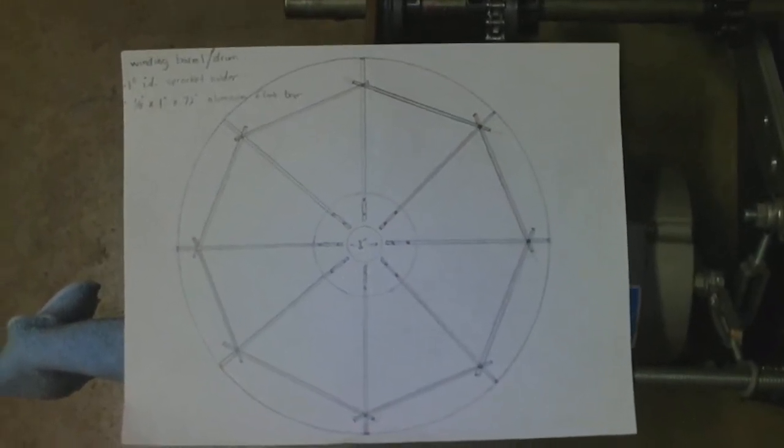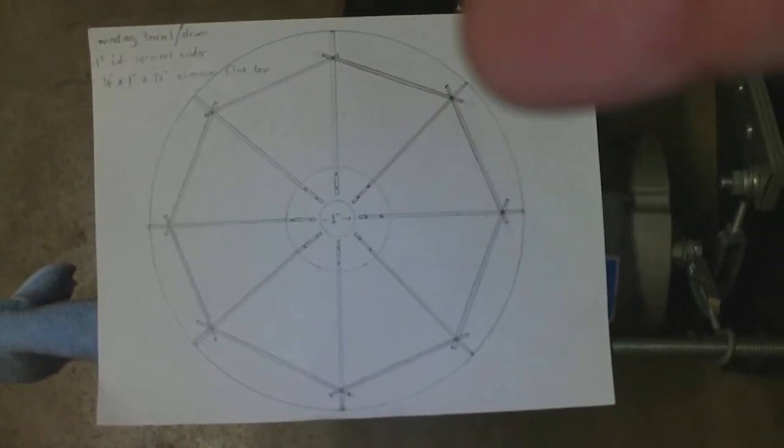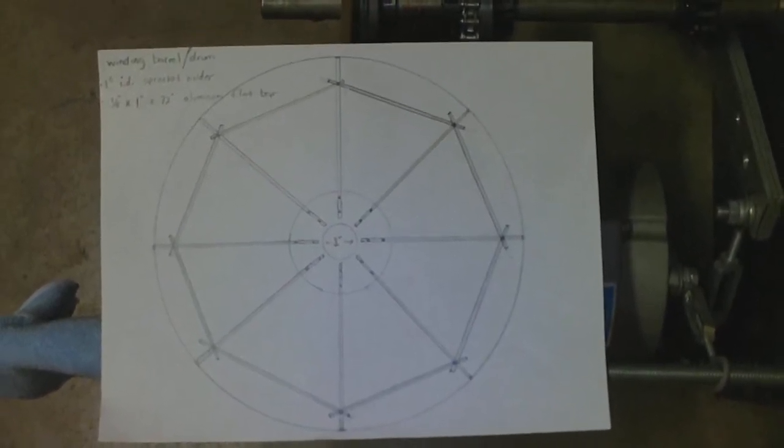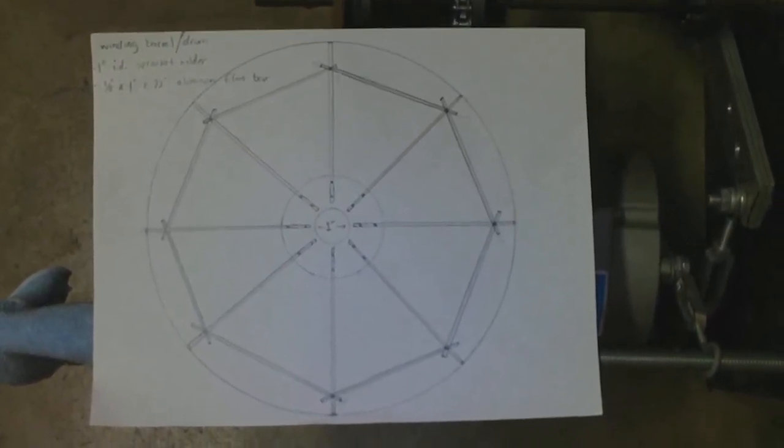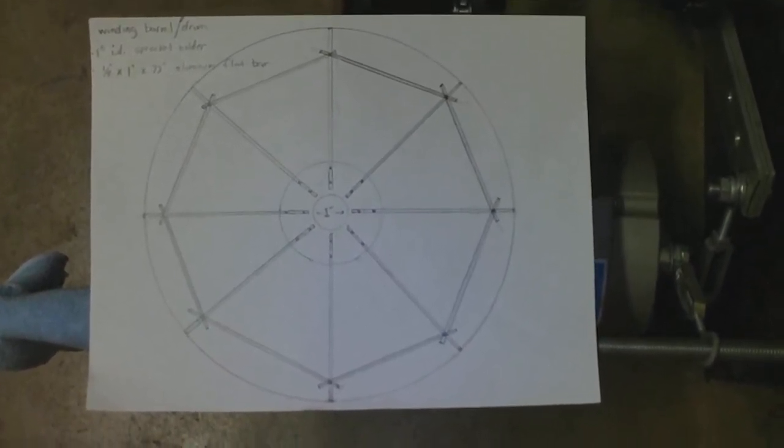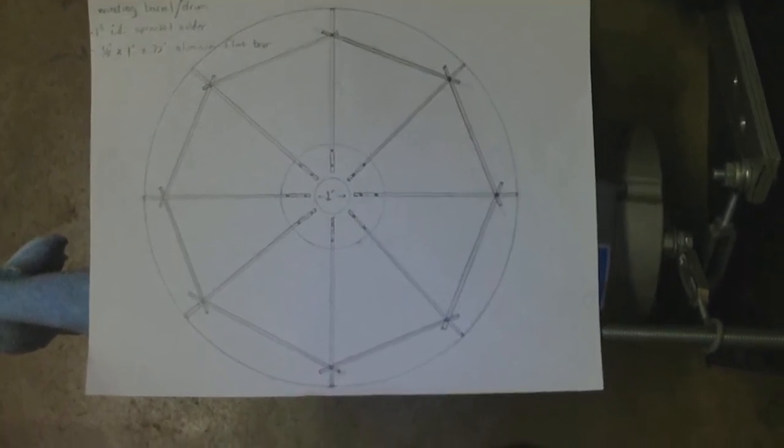And then more aluminum flat bar, you know, from like that point over to that point, right? And they're just going to overlap and put a bolt through them and connect them. And that'll provide not only the distance for the framework, but also some stability.